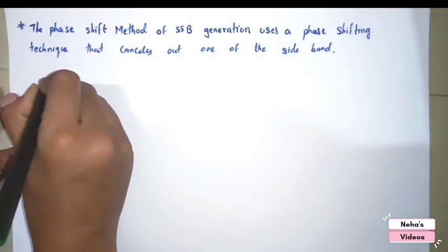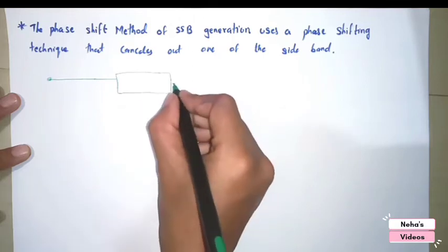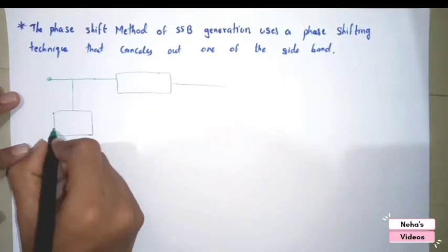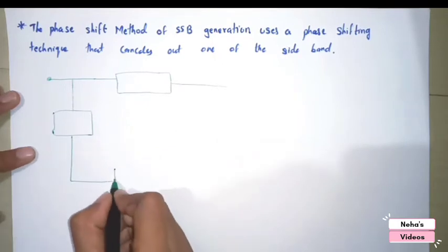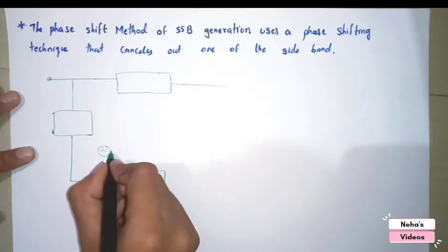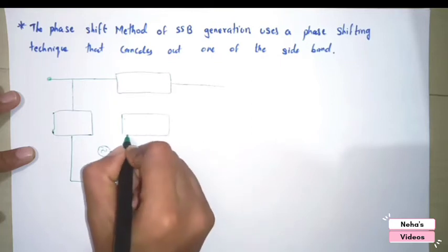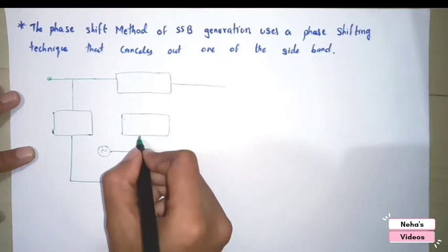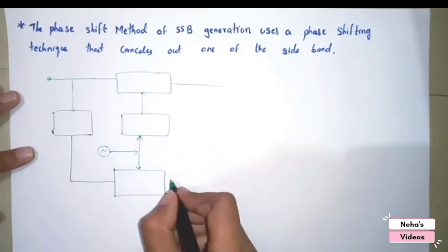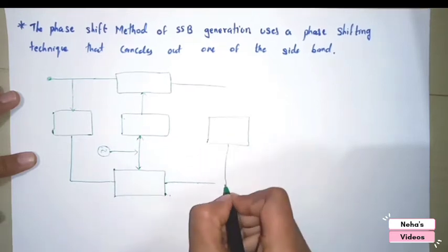Let's draw the diagram. From here we give the message signal to a balanced modulator — this is the first balanced modulator. The 90-degree phase shifted signal is given to another balanced modulator. We also have a local oscillator which generates the carrier signal. This goes to both modulators through a 90-degree phase shifting network, and finally there is a summing amplifier in which the signals are added up.